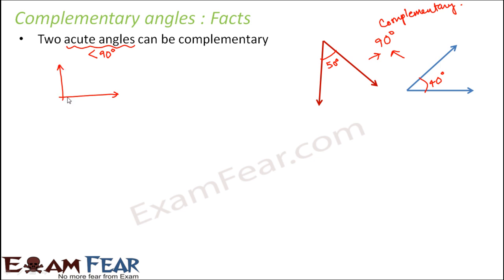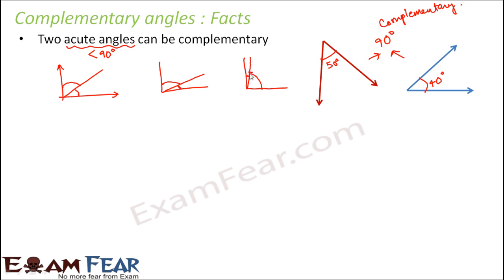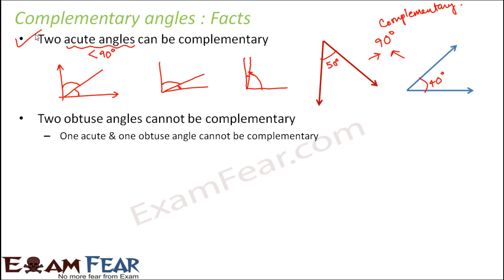Looking at more instances: a right angle is 90 degrees. You can have one angle smaller than the other, or one very small and one quite big — as long as both are acute angles, their sum can be 90 degrees. Therefore, two acute angles can definitely be complementary.